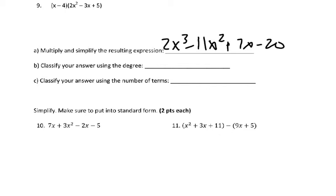So your answer should be 2x cubed minus 11x squared minus 7x minus 20. This has a degree of 3, so it's now a cubic function. And we have 4 terms, so it's a polynomial. Anything 4 and above is just a polynomial.